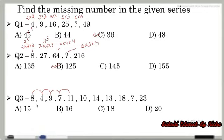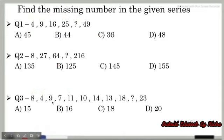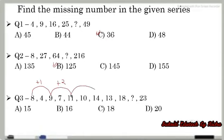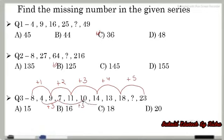Looking more closely at this alternating pattern, we can see there are two interleaved sequences. Adding 3 each time: 4 plus 3 is 7, 7 plus 3 is 10, 10 plus 3 is 13, and 13 plus 3 is 16. So 16 is the right answer for this question.